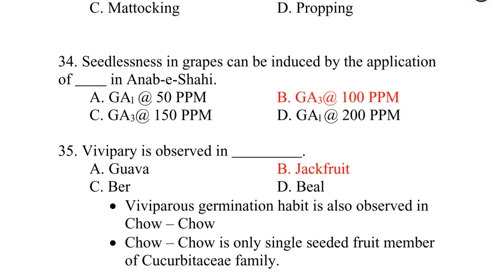Vivipary is observed in Jackfruit — option B. Vivipary germination habit is also observed in Chow Chow, which is the only single-seeded fruit member of the Cucurbitaceae family. Thank you friends for watching the video. Kindly subscribe the channel to receive the upcoming videos.